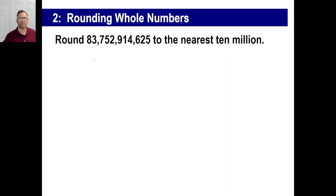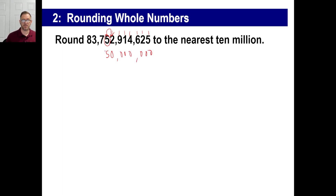Try another one — round this to the nearest ten million. We have: ones, tens, hundreds, thousands, ten thousands, hundred thousands, millions, ten millions — there it is. Look to the right: is it five or greater? No, so the five stays and everything to the right becomes zeros. Don't forget everything to the left stays as well, giving us 83 billion, 750 million — and that's my approximate annual salary.